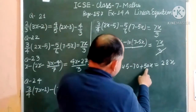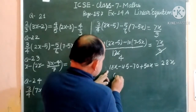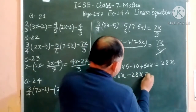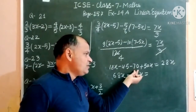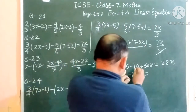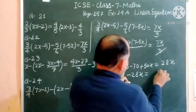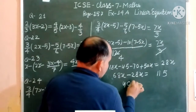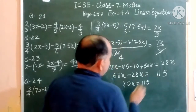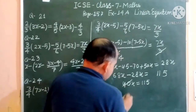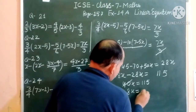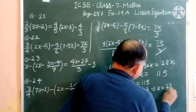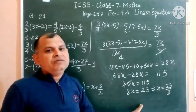Combining like terms on the left: 18x + 50x = 68x. Bringing 28x to the left gives 68x - 28x = 40x. The constants give 45 + 70 = 115 on the right. So 40x = 115, and dividing by 5 gives 8x = 23, therefore x = 23/8.